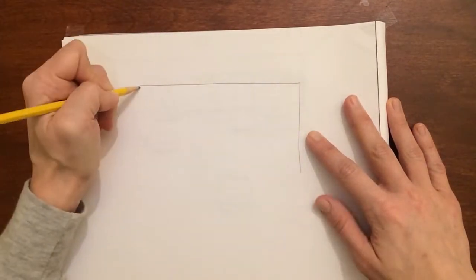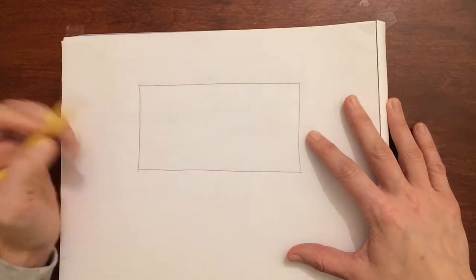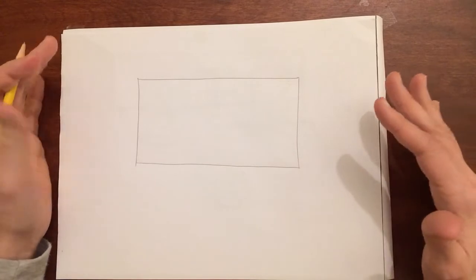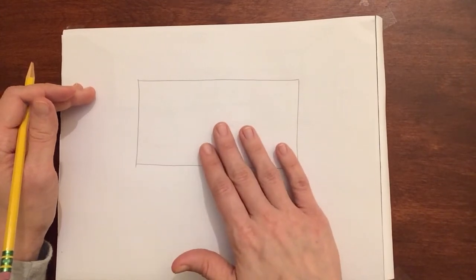The easiest way is to draw a rectangle in the middle of your page and the more you practice this the better you will get at figuring out where you want your rectangle to be. That rectangle is going to be the back wall of your room.